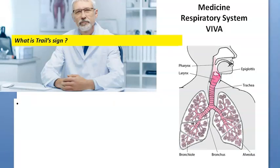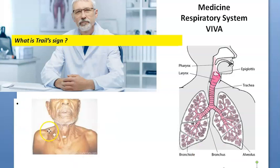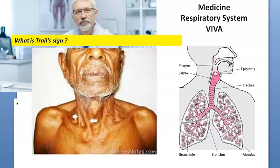What is trail sign? Sir, trail sign — it is also called the sternocleidomastoid sign. That is the undue prominence of the lower part of the sternocleidomastoid muscle due to deviation of the trachea to that side. Because of the deviation of the trachea, the lower part of sternocleidomastoid will have prominence — this is called trail sign.